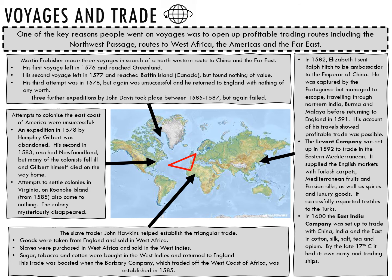The Levant Company successfully exported textiles to the Turks. Then in 1600, the East India Company was set up to trade with China, India and the East in cotton, silk, salt, tea and opium. It encouraged merchants and aristocrats to invest in these trading opportunities, and by the late 17th century it dominated trade between England and India and had its own private army and trading ships.